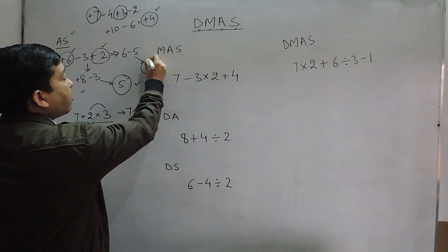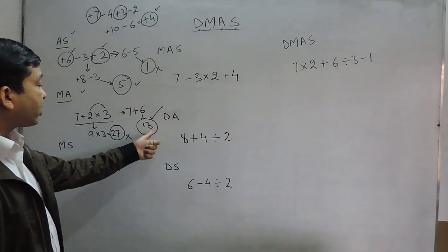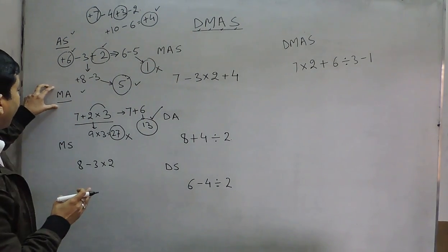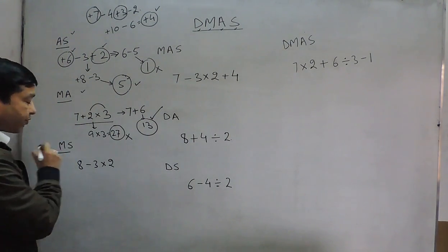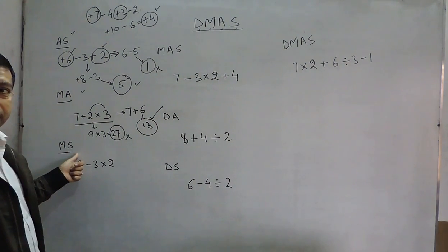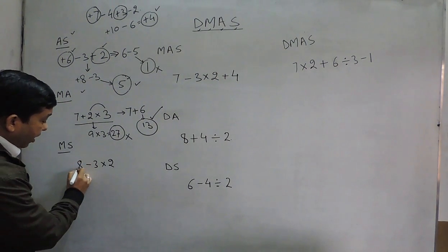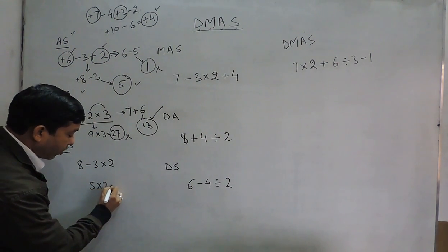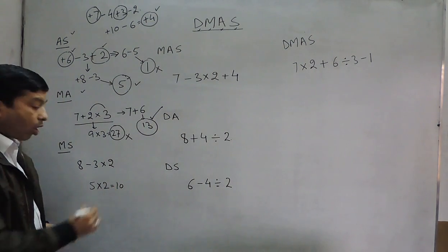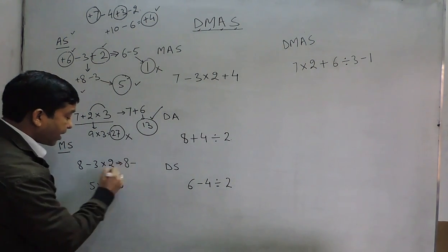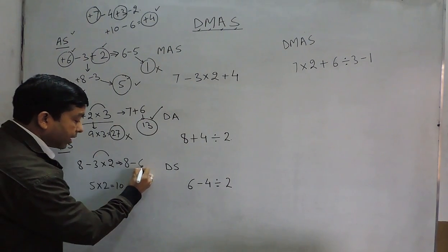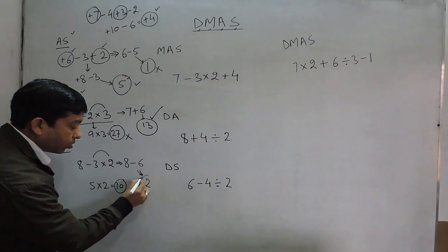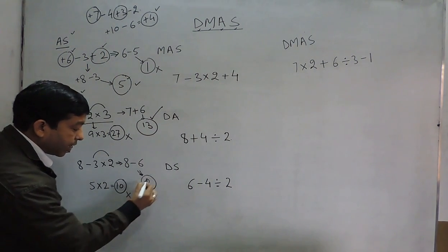Just as 1 was wrong and 5 correct in the first question, here 13 is correct and 27 is wrong. The same mistake can happen with multiplication and subtraction. For 8 minus 3 times 2, some solve it as 8 minus 3 equals 5, then 5 times 2 equals 10. But the correct way is 8 minus the product of 3 and 2, which is 6, giving the answer 2. So 10 is wrong and 2 is correct.